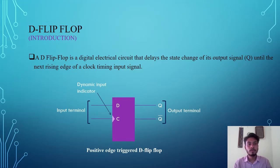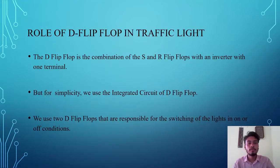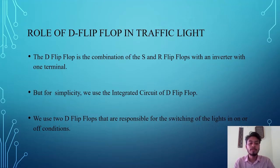Before discussing the role of D flip-flop, we need to know what a D flip-flop is. It is a digital electrical circuit that delays the state of the output signal Q until the next rising edge of the clock timing input signal. In the traffic light, we use two D flip-flops responsible for switching the lights on or off. The D flip-flop is a combination of S and R flip-flop with an inverter, but for simplicity we use the integrated circuit of D flip-flop.